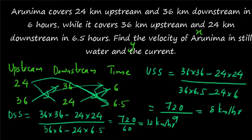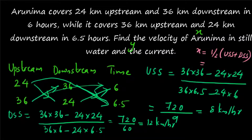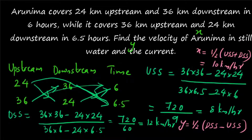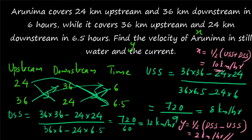Now we have USS = 8 and DSS = 12. X = ½ × (upstream speed + downstream speed) = ½ × (12 + 8) = ½ × 20 = 10 km/h. Y = ½ × (downstream speed − upstream speed) = ½ × (12 − 8) = ½ × 4 = 2 km/h. To summarize: form a table, find the cross products, take the differences, write as numerator over denominator to get USS and DSS, then find X and Y. Thank you for watching.